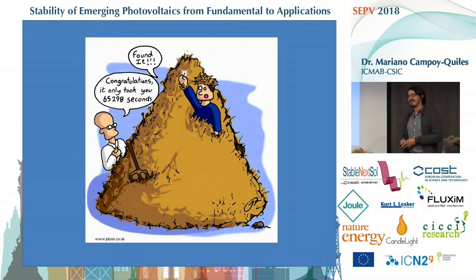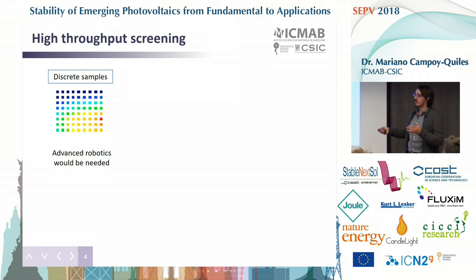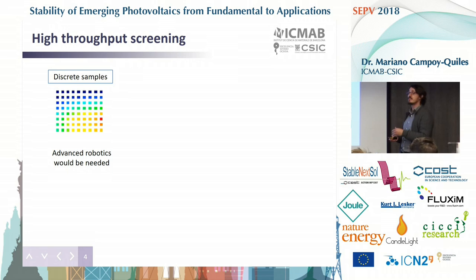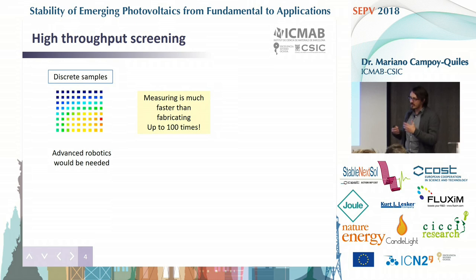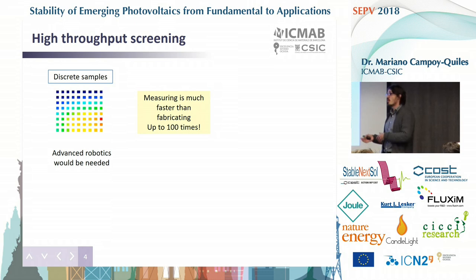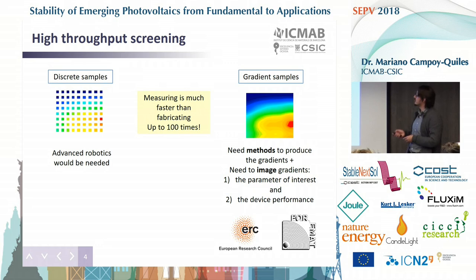So the idea is: how are we going to find the needle in the haystack? How are we going to find this 20% organic solar cell? If you think of high-throughput methods, typically you can do lots of small samples and vary the parameters of interest, and this typically requires advanced robotics or very advanced systems to measure. There was also the realization that fabricating a device is typically quite time-consuming, while measuring it is very fast. If you make 10 samples in parallel, it will take you roughly a couple of days, while measuring those 10 samples will take you half an hour.